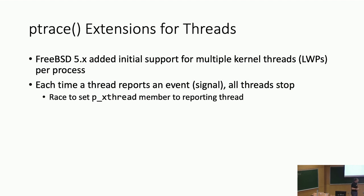The way reporting is currently implemented is in struct proc, there is a single member called p_xthread that is a pointer to a thread. When a debugging thread wants to report an event, it locks the process and checks if this member is null. If it is, it gets to set it — it's won the race to be the thread that gets to report an event. If it's already not null, it just pauses. It'll get a chance in the future when resumed to try to go around the loop again and see if it can win the race to be the reporting thread.